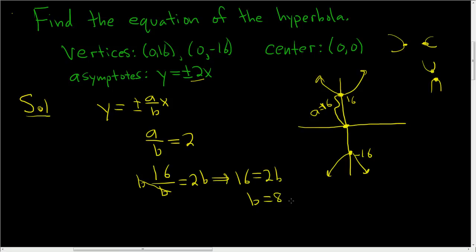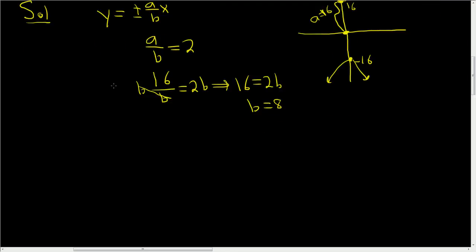All right, so b is 8. All right, let's finish. So it opens up and down, so the y comes first. So it's going to be y squared over a squared minus x squared over b squared equals 1. So a was 16. So 16 squared is 256.